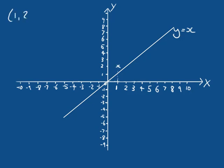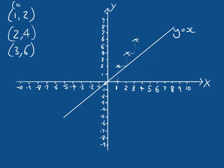Traveling along another unit in X gives X equals 2, and traveling up two units in Y gives Y equals 4. One more: X equals 3, Y equals 6. And this line passes through the origin. So we have four points: (0, 0), (1, 2), (2, 4), (3, 6) — defining a line that is steeper than Y equals X.